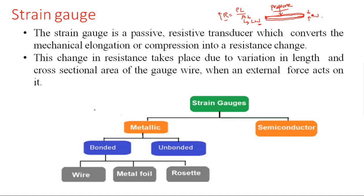Strain gauges are classified based upon the type of material used to construct them. They are broadly classified into metallic strain gauges and semiconductor strain gauges. In the metallic strain gauge category, we have two sub-categories: bounded and unbounded. In the bounded type, there are three types: wired, metal foil, and rosette type.